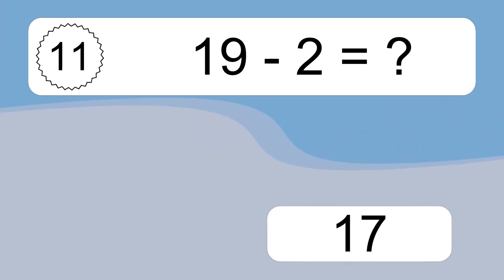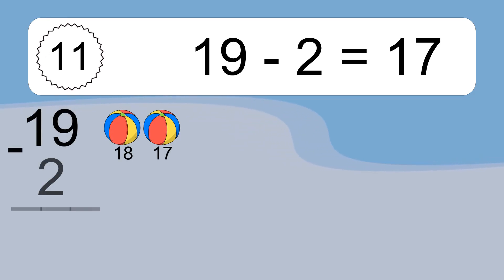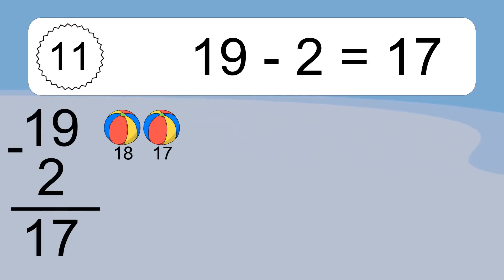19 minus 2 equals what? 19 minus 2 equals 17. Let's count it: 18, 17.